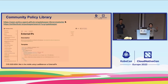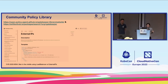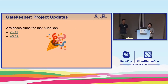Here's an example of a policy in the community policy library — this is one policy that someone contributed based on the CVE to enforce external IPs to prevent a man-in-the-middle attack by ensuring load balancers are not using external IPs.